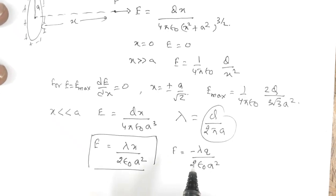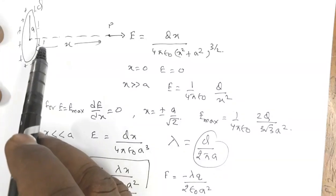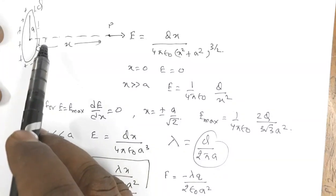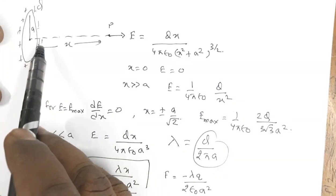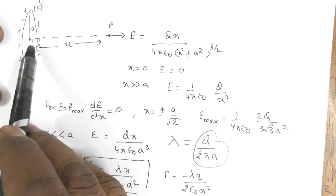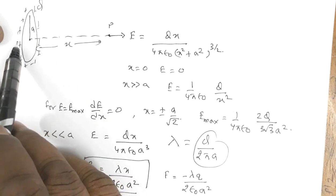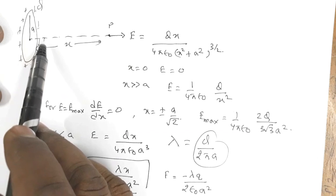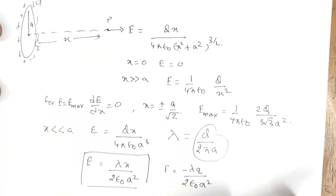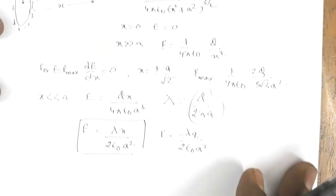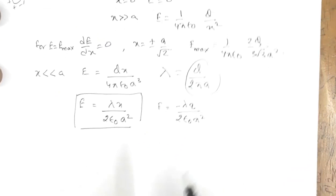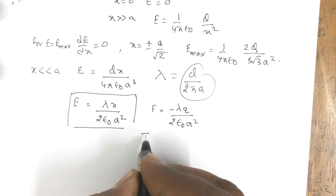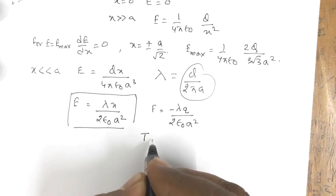Again, if the negative charge is placed here, it will experience a force towards the ring — so it will move to the other side, and then again it will start experiencing attractive force. So this negative charge will start oscillating, and the oscillation period will be...